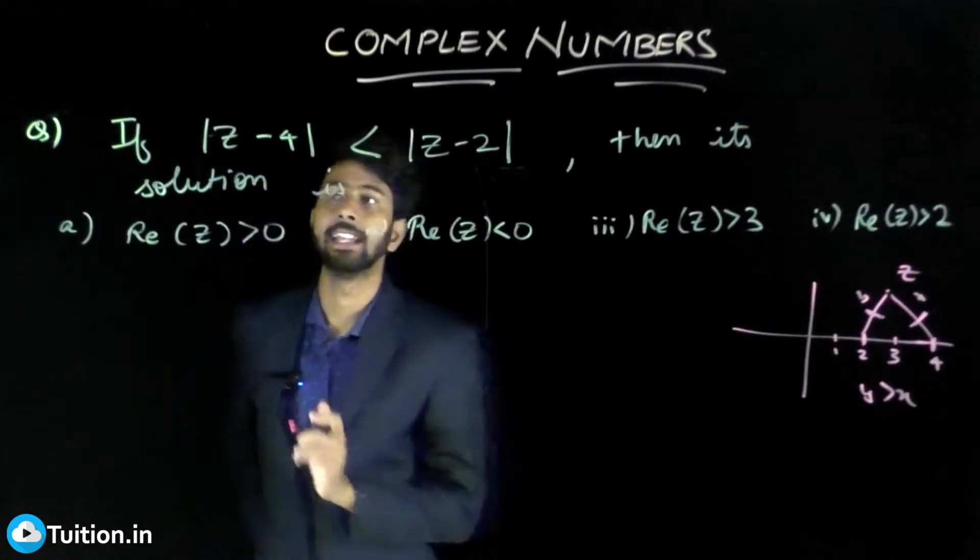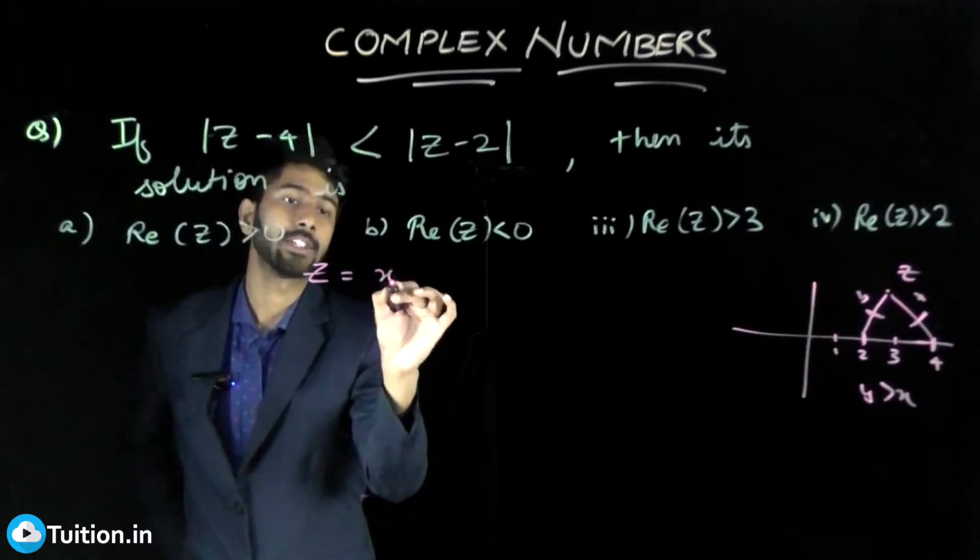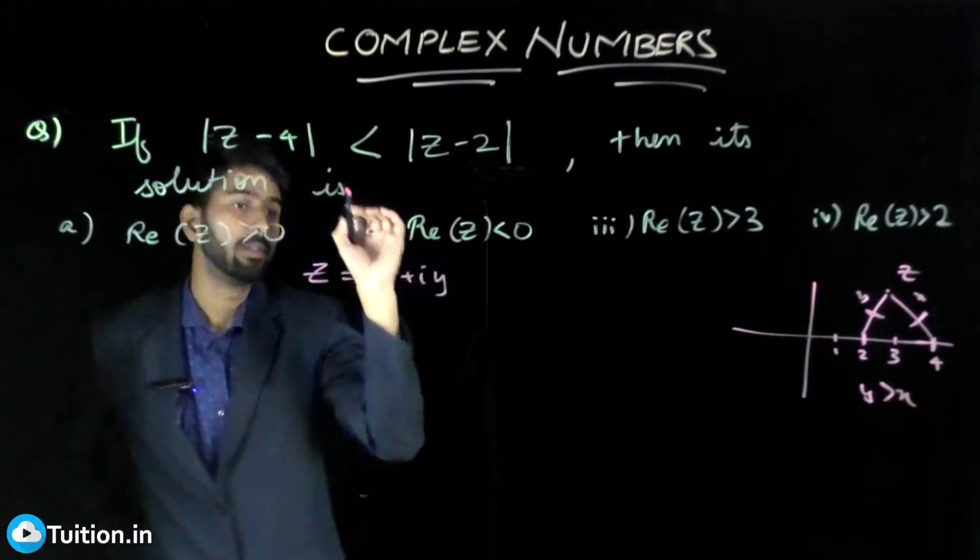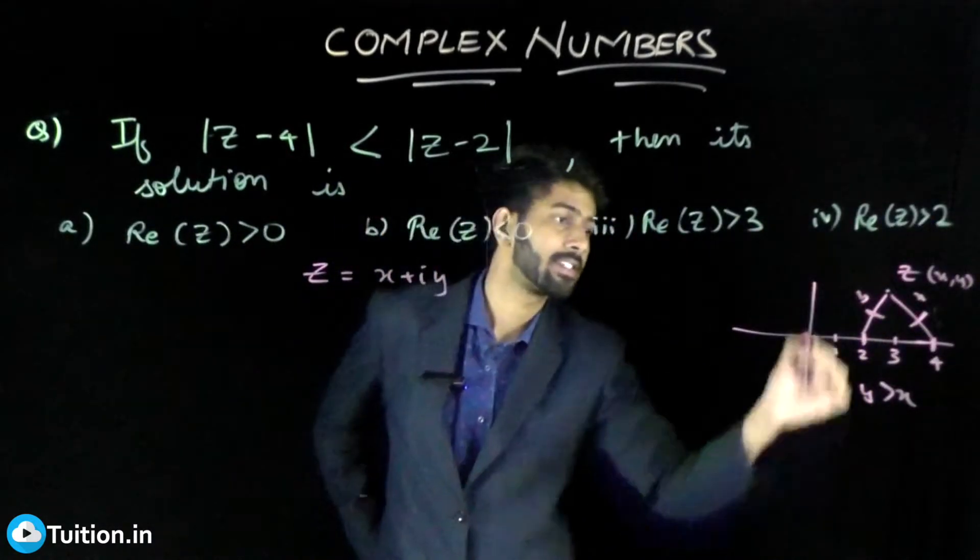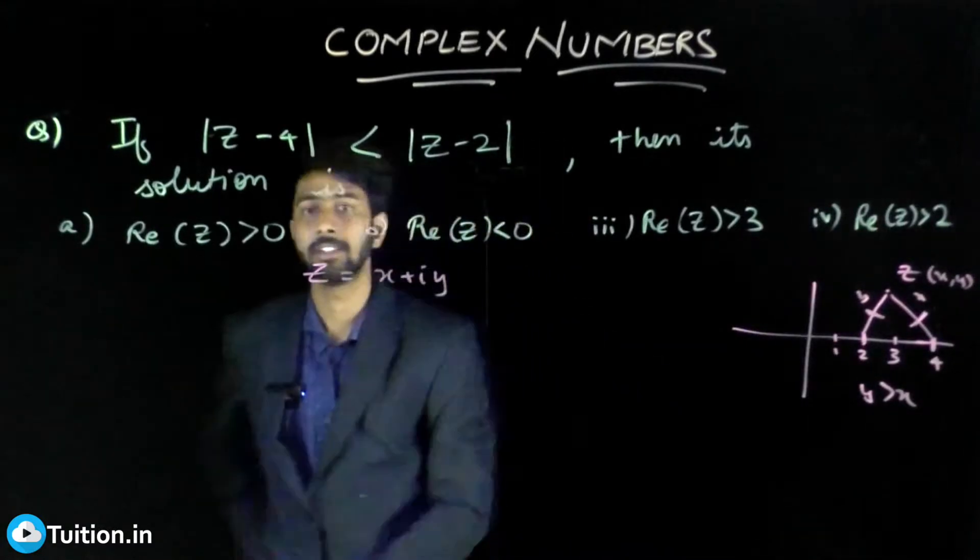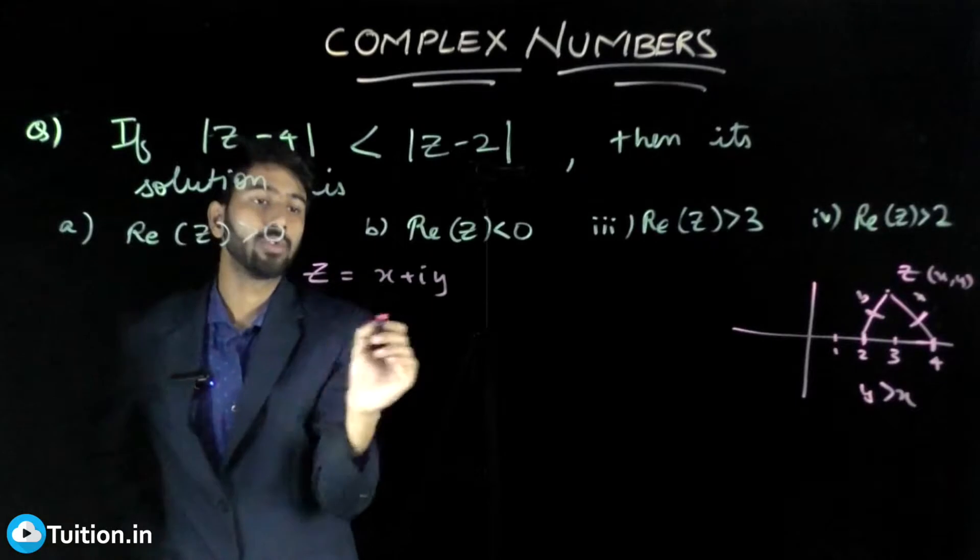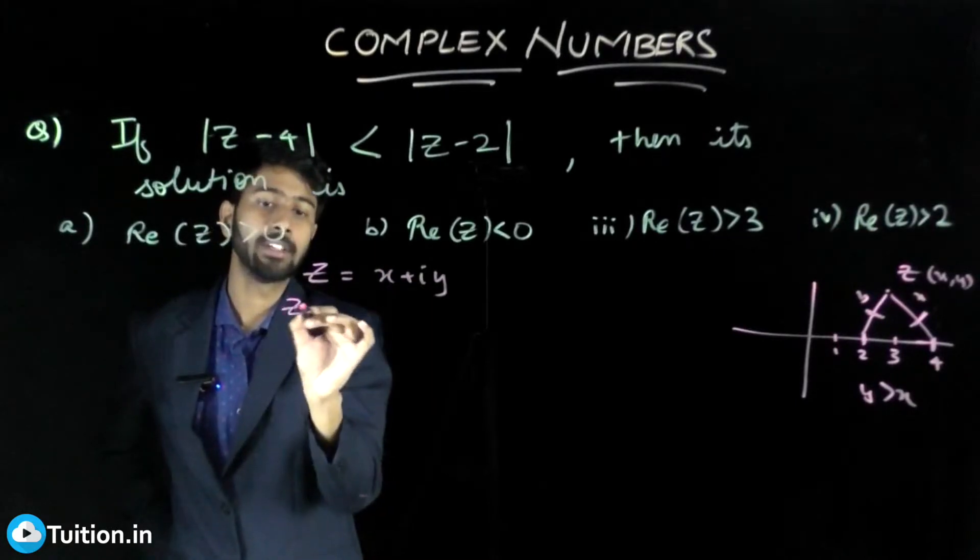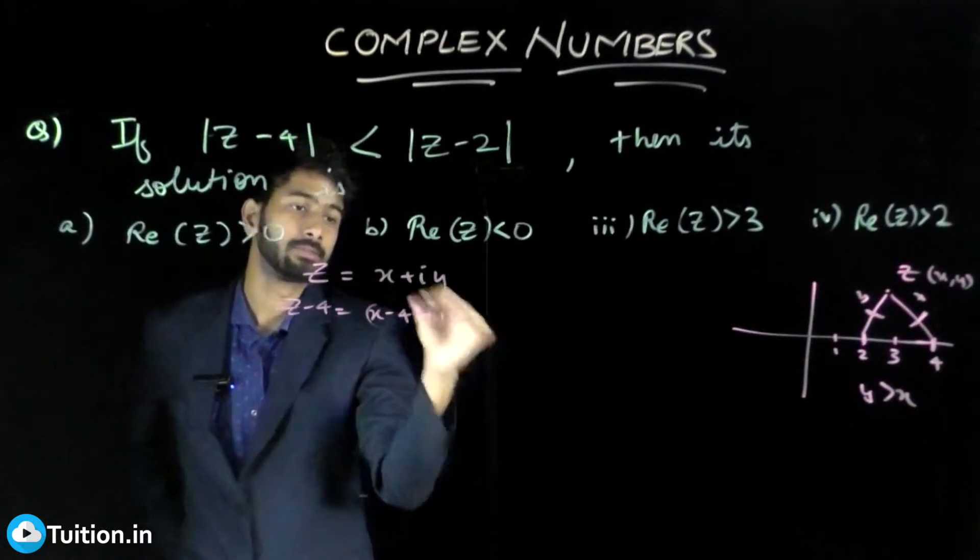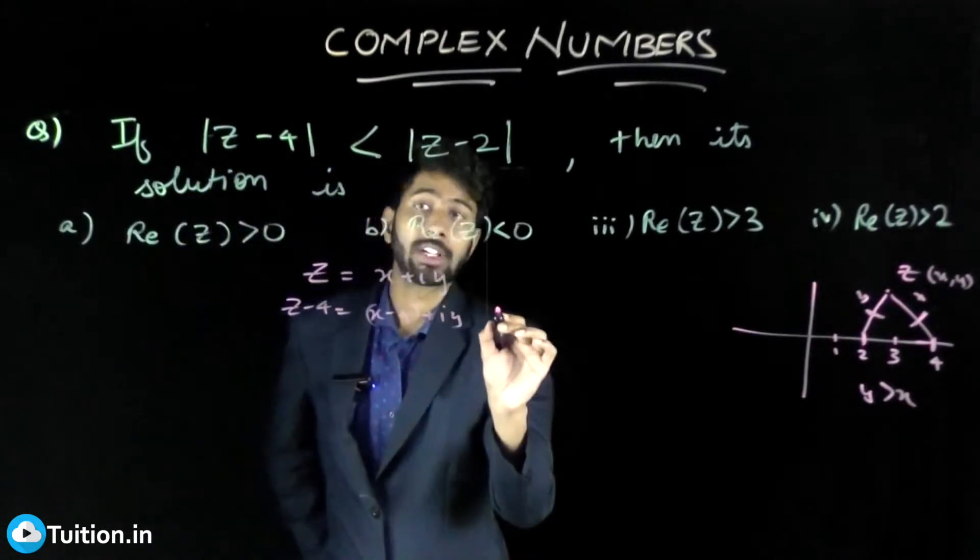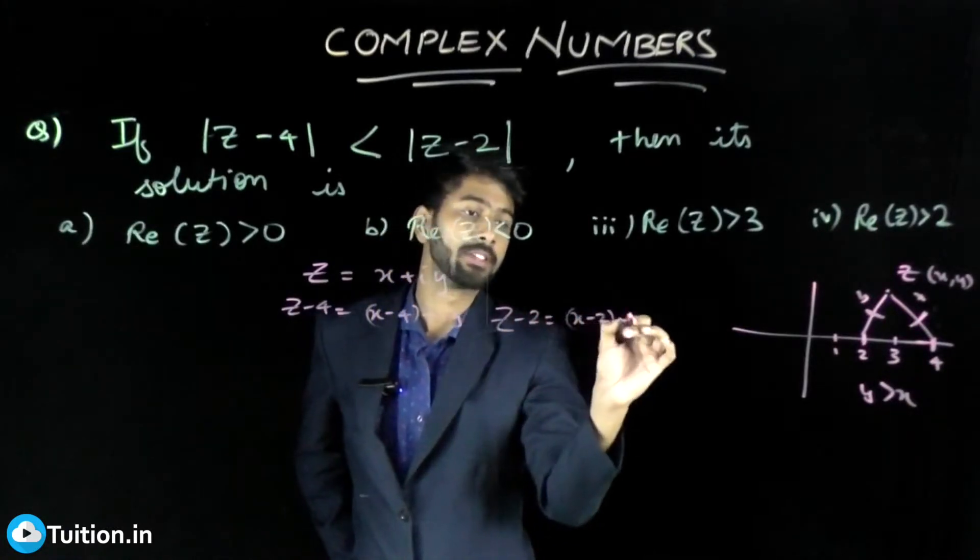When you visualize it geometrically you can come up with certain tricks, but for now I'll take the algebraic method. I'll assume Z to be equal to some X plus iY. The X coordinate, Y coordinate. Let me calculate Z - 4, which is X - 4 + iY. Let's also calculate Z - 2, which is X - 2 + iY.